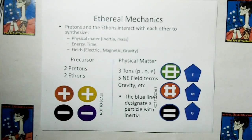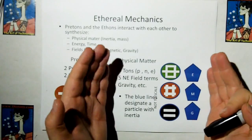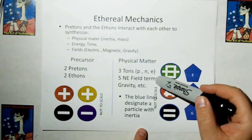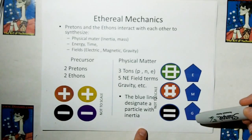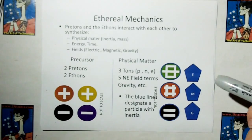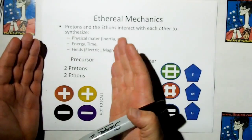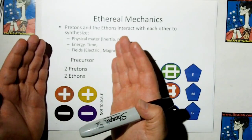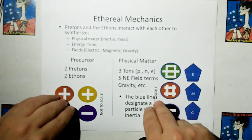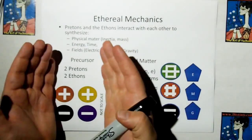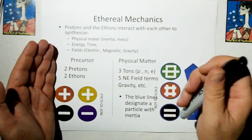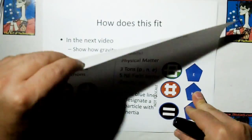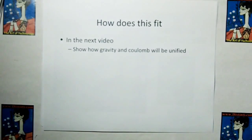So let's look at what we've got now for ethereal mechanics. On this side we have physical matter. In physical matter we have three tons, we have five terms of new electromagnetism, but that's basically the electric field, the magnetic field, and the gravitational field. And then on the precursor side of the fence, all of this can be synthesized from two pretons and two ethons. And from this precursor things, we can synthesize matter, inertia, time dilation, gravity, magnetic fields, electric fields, everything, you name it.